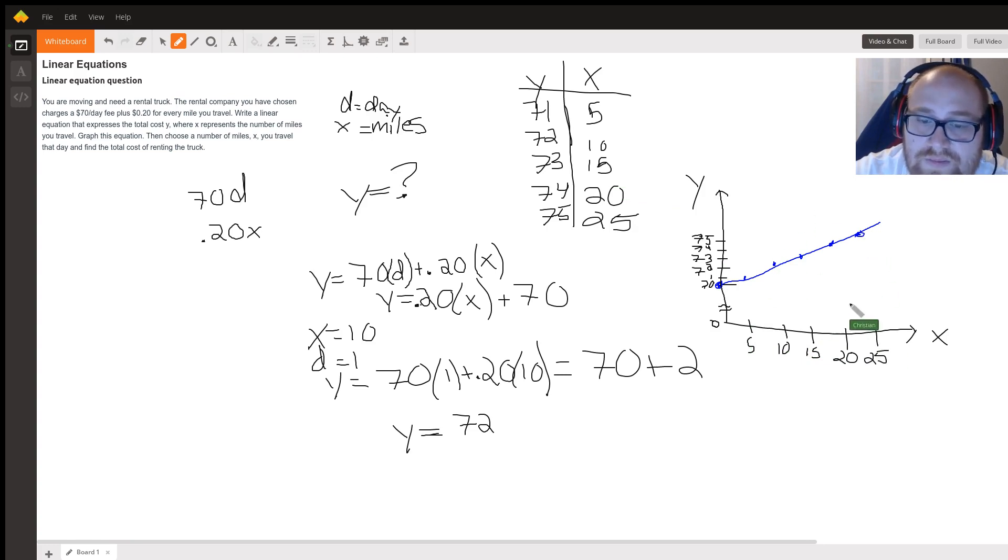Then choose the number of miles x you travel that day and find the total cost of renting the truck. Like I previously said in the video, we are going to travel 10 miles. So with that we have one day, 10 miles, so 70 plus 2 dollars because 0.20 times 10 is 2, you have 72 bucks.